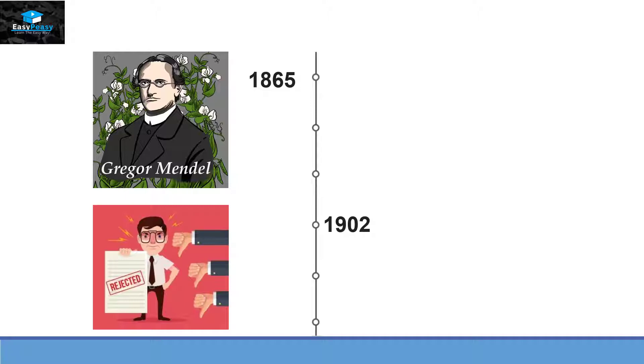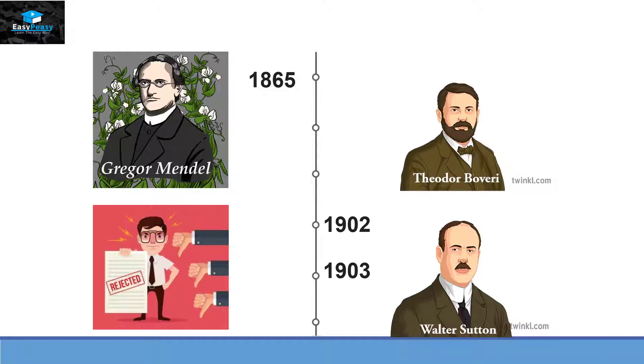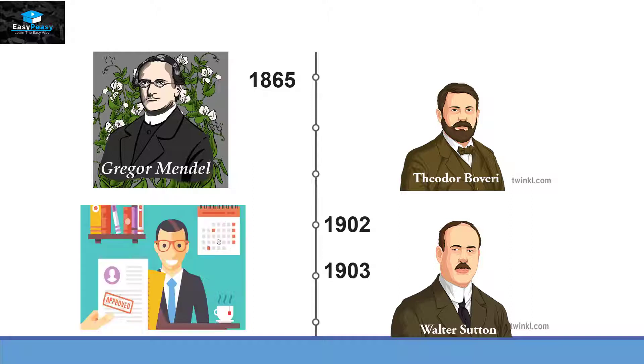Then in 1902 and 1903, two scientists worked independently and rediscovered Gregor Mendel's hypothesis. These scientists were Theodor Boveri and Walter Sutton.